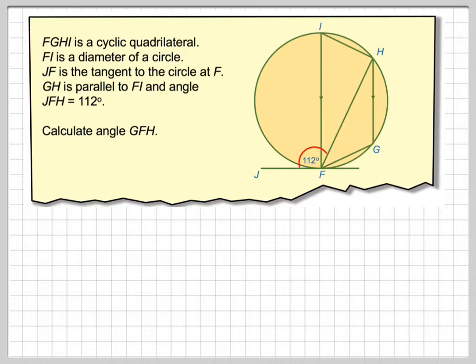GH is parallel to FI. And angle JFH, so this angle here, is equal to 112 degrees.